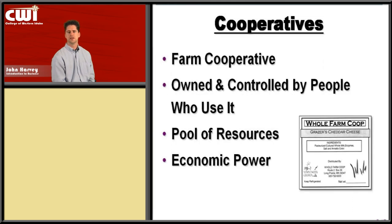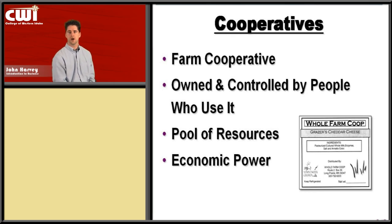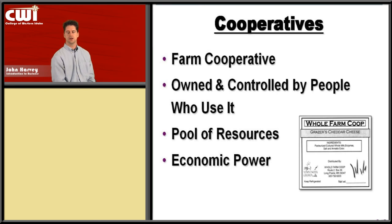Cooperatives are a somewhat unique breed of business — they're owned and controlled by the people that use them. We see this in examples like farms, where farmers combine their produce and sell it collectively, then split the profits. In Boise, the Boise Co-op is an example where people actually help stock the shelves as co-owners participating in the business. You pool your resources together and collectively hope to have enough economic power to make the business run. Farms, vineyards, and some retail outlets are good examples.